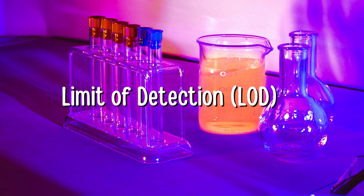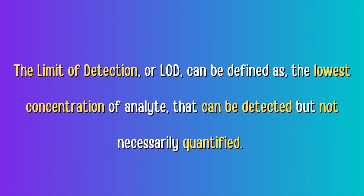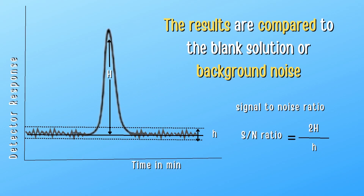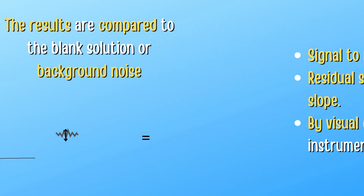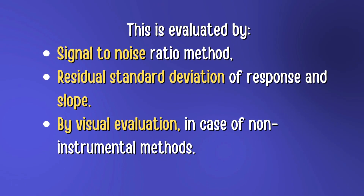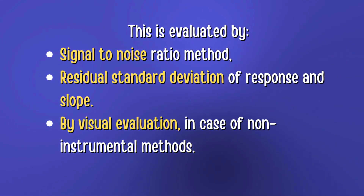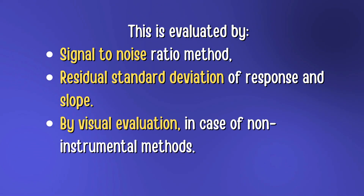Next, we will discuss the limit of detection, or LOD. The LOD can be defined as the lowest concentration of analyte that can be detected but not necessarily quantified — in other words, the lowest amount that can be reliably detected and distinguished from background noise. It is determined by performing experiments using standards with known low concentrations and comparing results to a blank solution. LOD is evaluated by signal-to-noise ratio, residual standard deviation of response and slope, or by visual evaluation for non-instrumental methods. A low LOD indicates a more sensitive method.